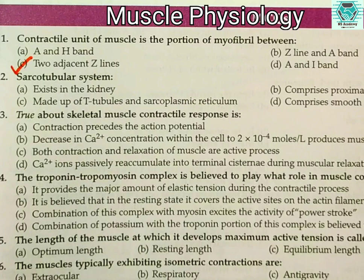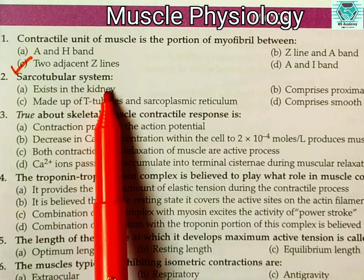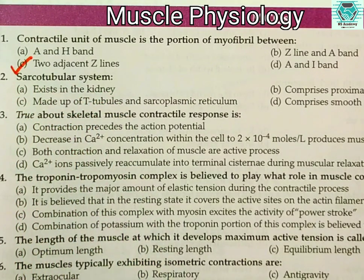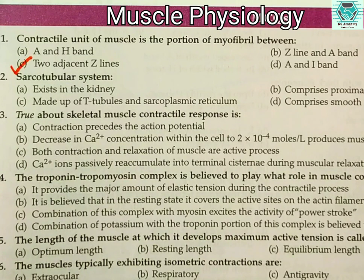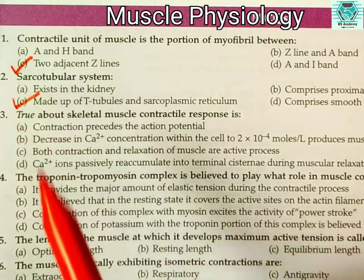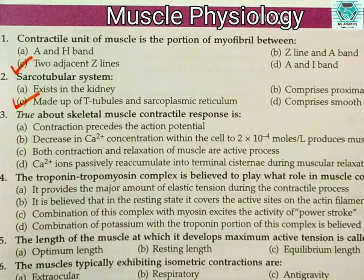Number two: the sarco-tubular system — (a) exists in the kidney, (b) comprises proximal and distal convoluted tubules, (c) made up of T tubules and sarcoplasmic reticulum, or (d) comprises smooth and rough endoplasmic reticulum? The right answer is (c), made up of T tubules and sarcoplasmic reticulum. This system is very important for the muscles.